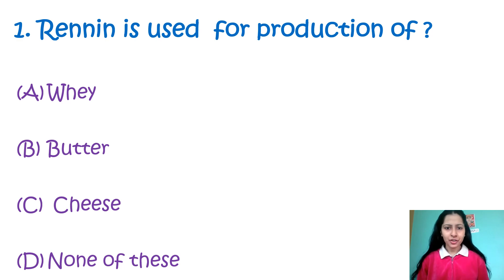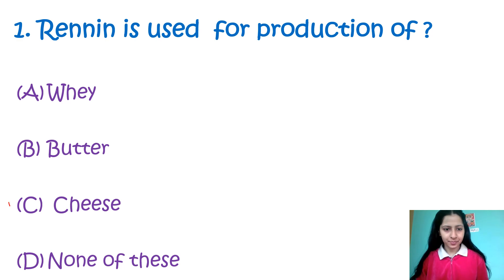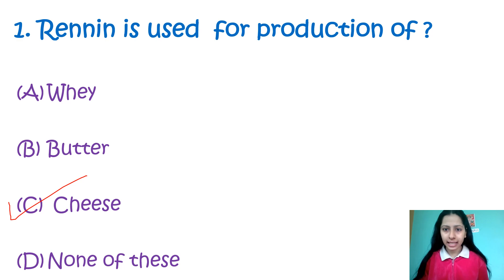Question 1: Renin is used for production of — option A: whey, B: butter, C: cheese, D: none of these. Renin is used for the production of cheese. Renin contains the enzyme chymosin, which is a protein-digesting enzyme that causes milk protein to change into caseins, and this enzyme aids in the curdling of milk. So the correct option is cheese.